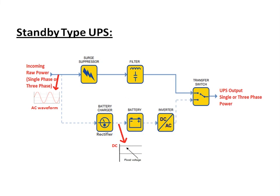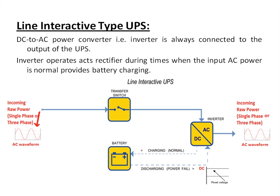The line interactive type UPS: in a line interactive UPS, the DC-to-AC power converter (inverter) is always connected to the output of the UPS system. This inverter also has circuitry so that in case of any brownout, over-voltage, or under-voltage, it will not transfer the switch to the battery — the inverter will directly feed the output to the load.